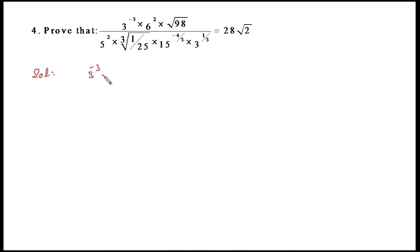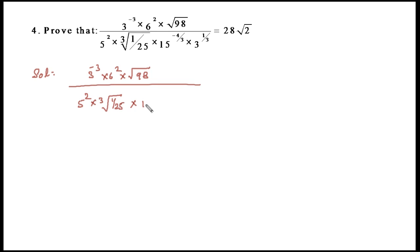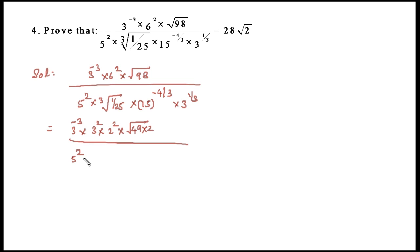The fourth question: simplify [3^(−3) × 6^2 × √98] / [5^2 × ∛(1/25) × 15 × 3^(1/3)]. We rewrite: 6^2 = (3×2)^2 = 3^2 × 2^2; 98 = 49 × 2 so √98 = 7√2; 25 = 5^2 so ∛(1/25) = (5^2)^(−1/3) = 5^(−2/3); 15 = 3×5 so 15 · 3^(1/3) contributes 3^(1+1/3) · 5 terms.